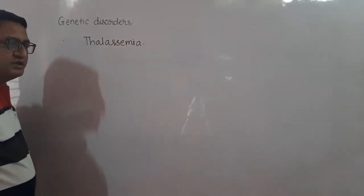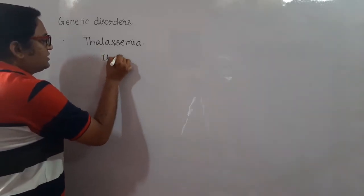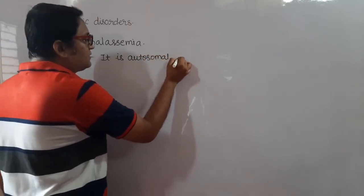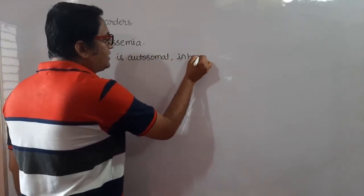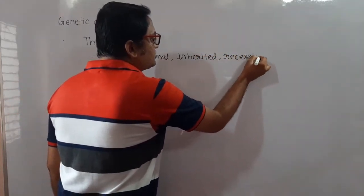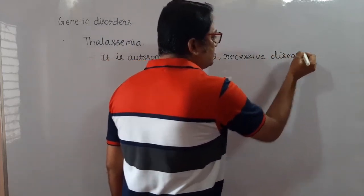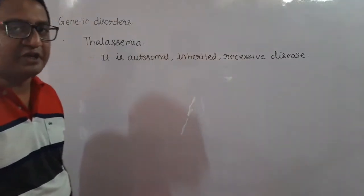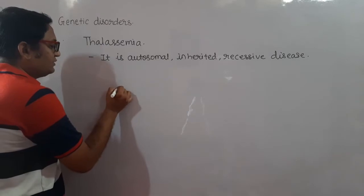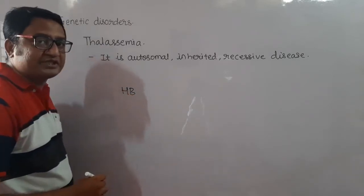Thalassemia is an autosomal inherited recessive disease. It is related with hemoglobin. Hemoglobin (Hb) is made up of four polypeptide chains.